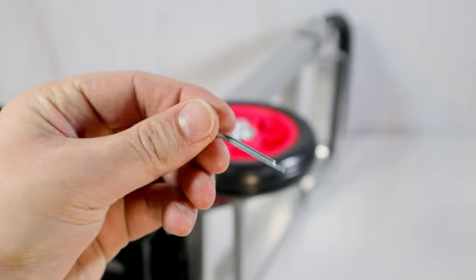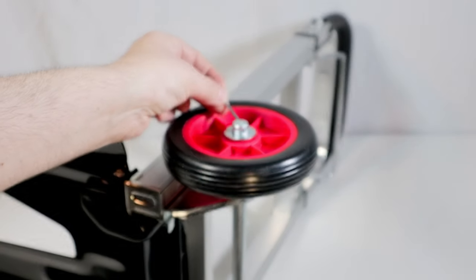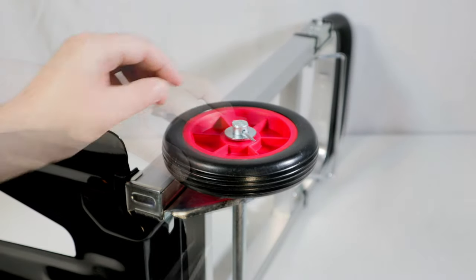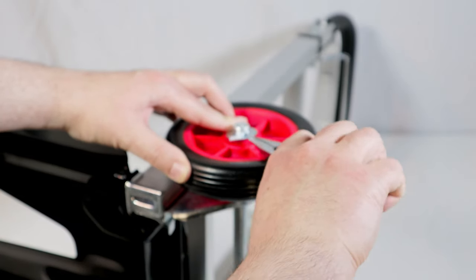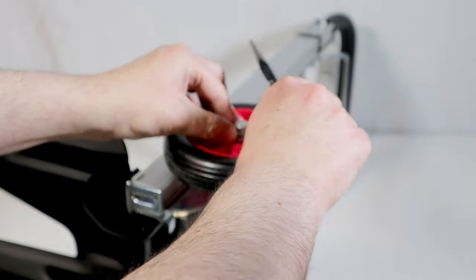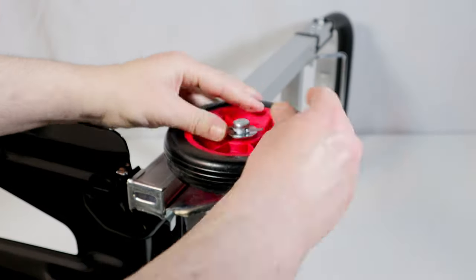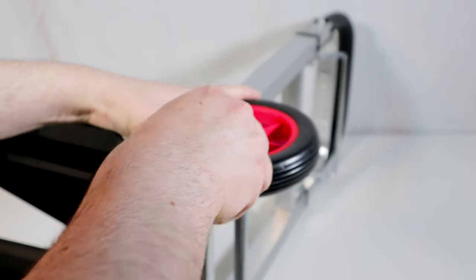Before proceeding with the modification, I assembled the trolley and did some tests in the standard factory configuration. The assembly operation basically consists in connecting the wheels using the spacers, washers and stops supplied.